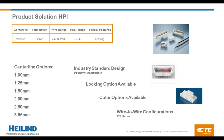Taking a look at our HPI solution, this is our last standard size product offering, available from 1 millimeter to 4 millimeter centerline options. This is our industry standard footprint compatible design, so if you're looking at one of our competitors' designs, this will be very similar as far as the footprint and mating interface. We also have various options in this product line, such as locking, different color options, and wire-to-wire configurations.